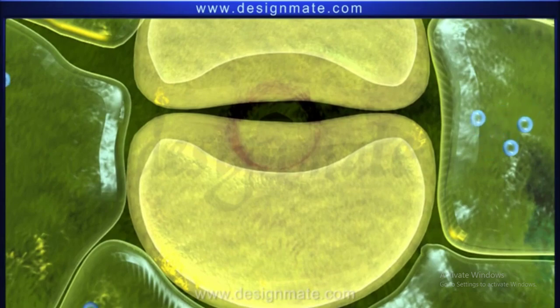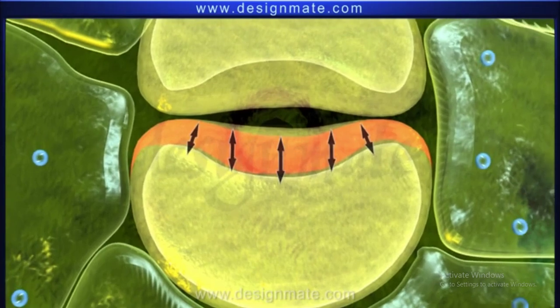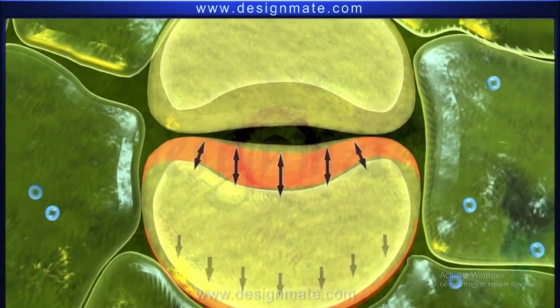The wall of the guard cells surrounding the aperture is thicker compared to the outer wall.